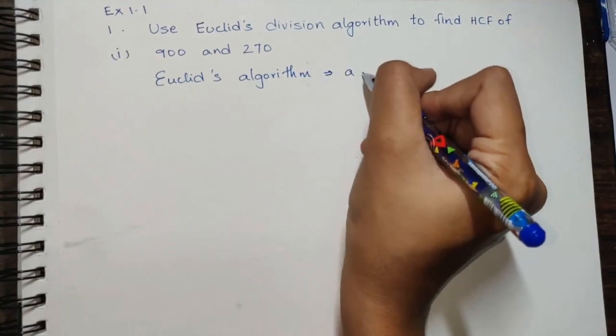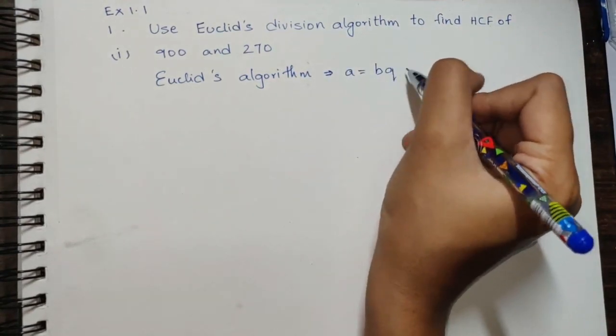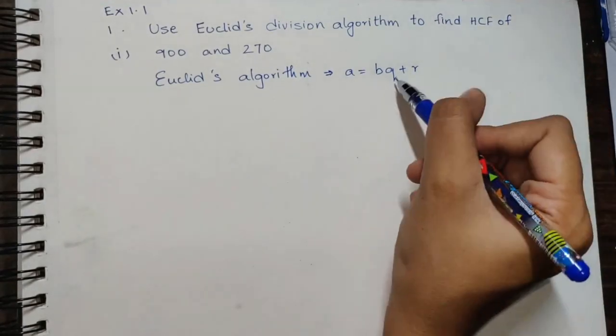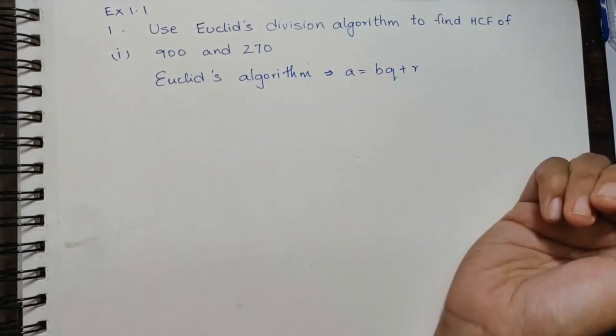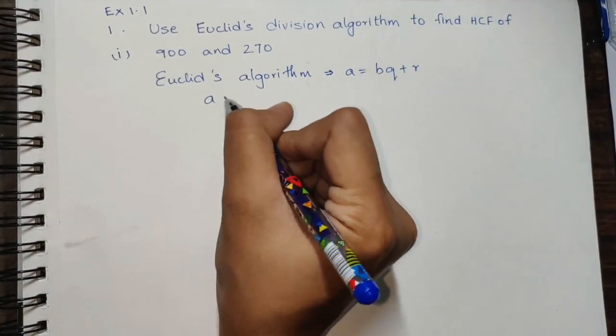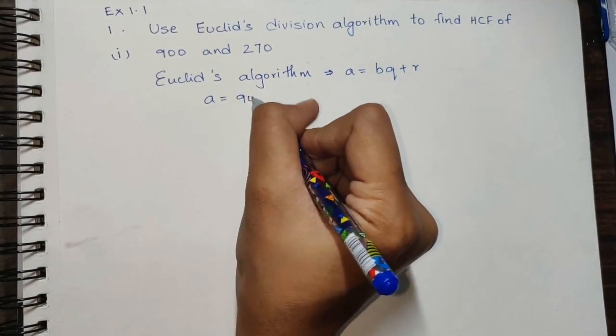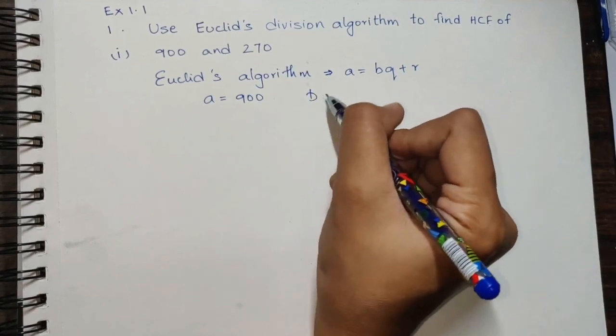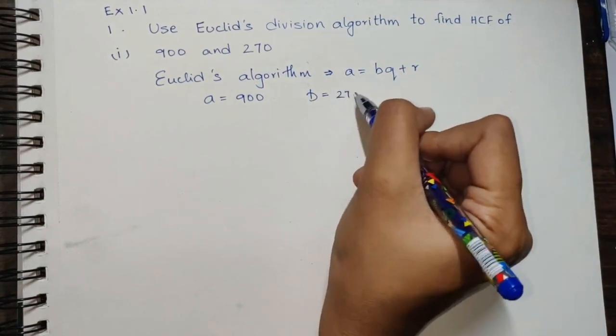is a equals b times q plus r, where q is the quotient, r is the remainder, and a and b are two positive integers. Here we will take the bigger number 900 as a and the smaller number 270 as b.